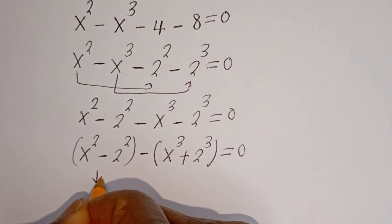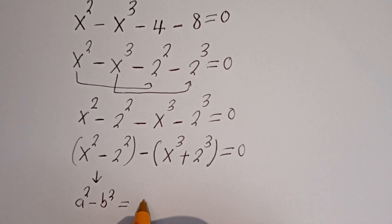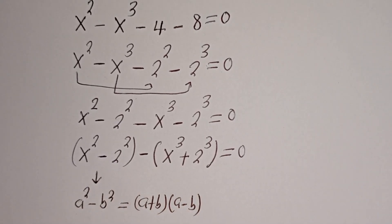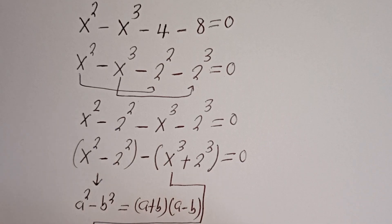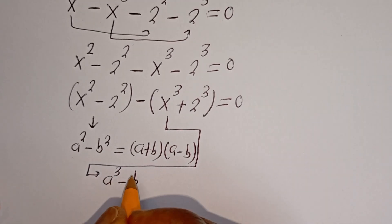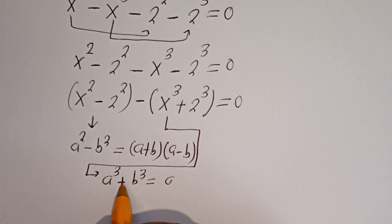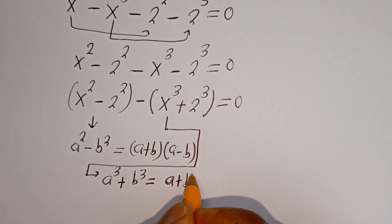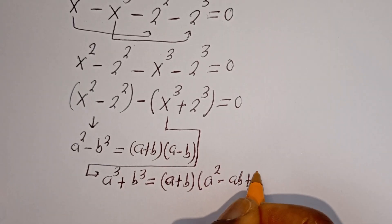Now this is in the form of a perfect square. That is, if you have A squared minus B squared, this is equal to (A plus B)(A minus B). And here, if you have A to the power of 3 minus B to the power of 3, this is equal to (A plus B)(A squared minus AB plus B squared).